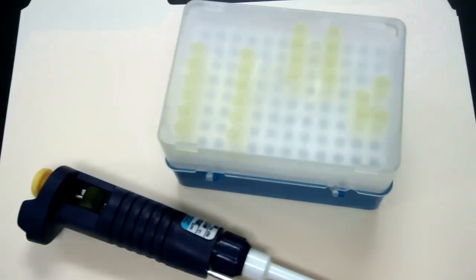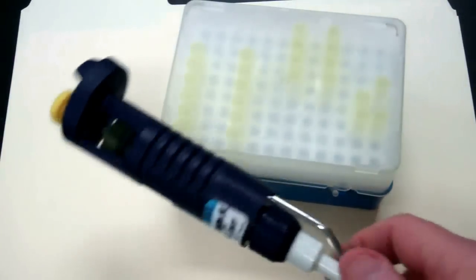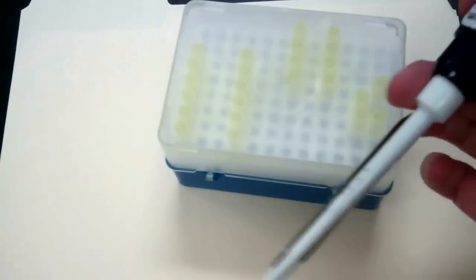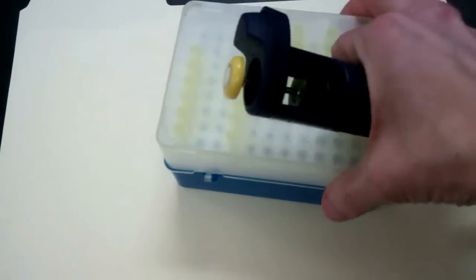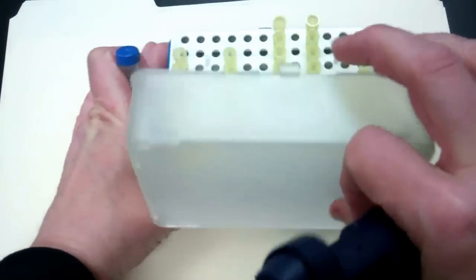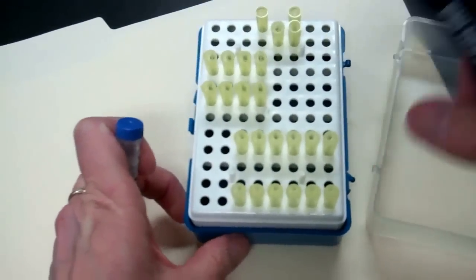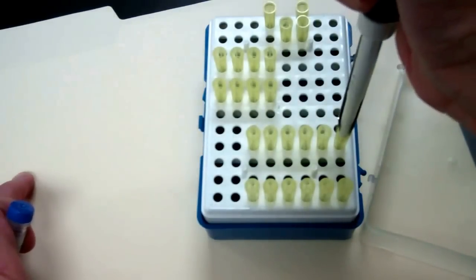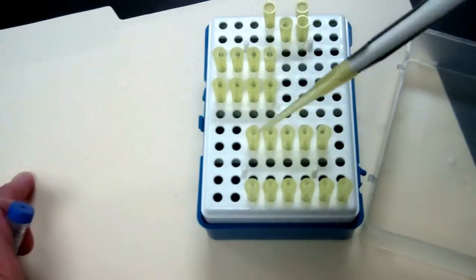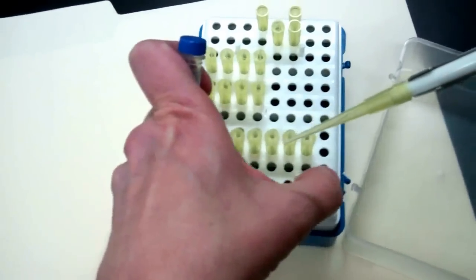So today you're going to learn how to use a micropipette, and this is the tool that our class is using. First thing you need to do is get a box of tips and you want to press firmly into one of the tips so that it sticks on the end of your micropipetter. Today we're practicing with dye.